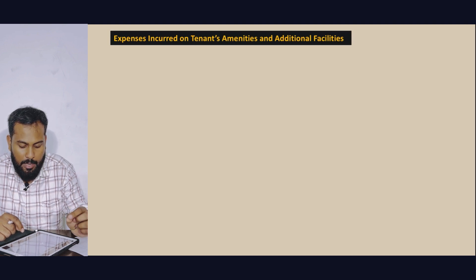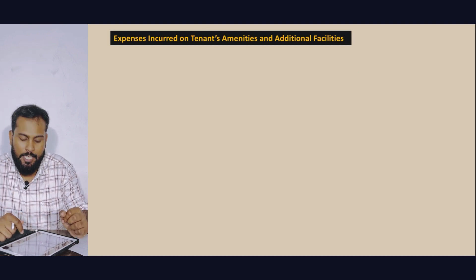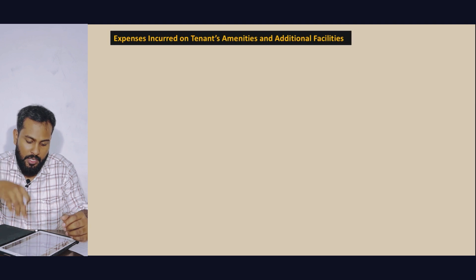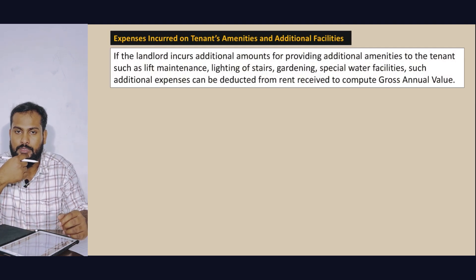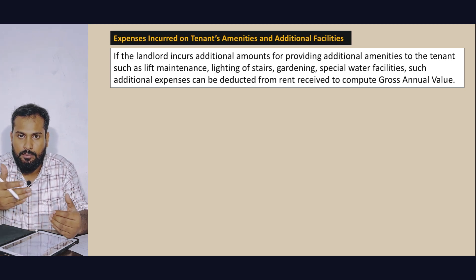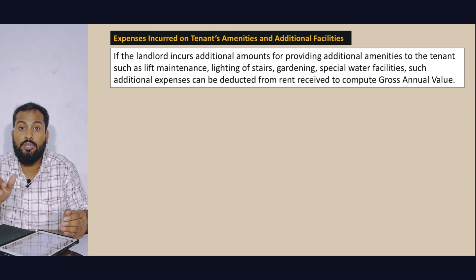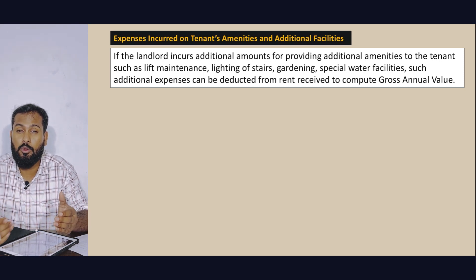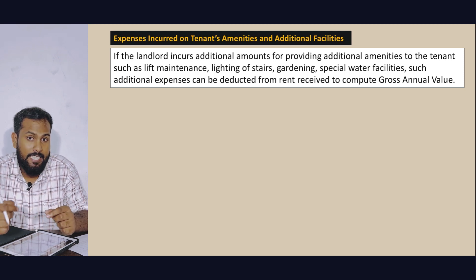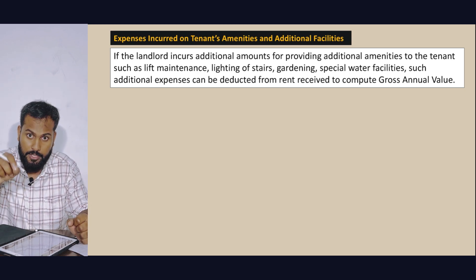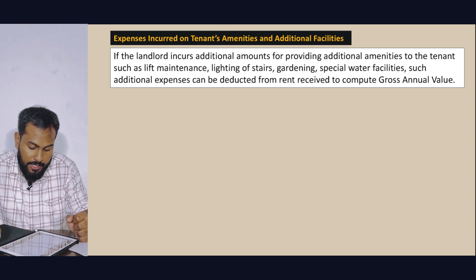Next topic: Expenses incurred on tenants — amenities and additional facilities. The basic things include repair and all such expenses. These are additional facilities provided by the landlord to the tenant.